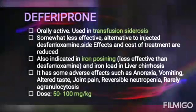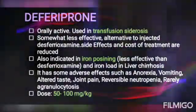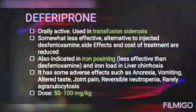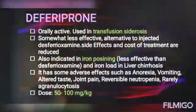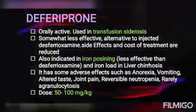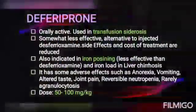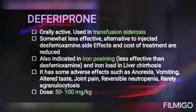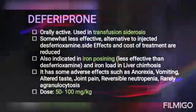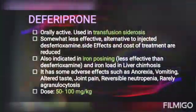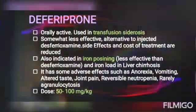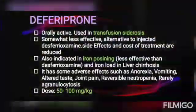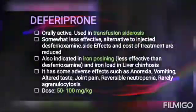The last drug is deferasirox. It is orally active and used in transfusion siderosis — the accumulation of iron in the liver, heart, and endocrine organs — in patients who receive frequent blood transfusions, such as those with thalassemia, sickle cell disease, leukemia, aplastic anemia, or myelodysplastic syndrome. It is a somewhat less effective alternative to injected desferrioxamine, with reduced side effects and cost of treatment. It is also indicated in iron poisoning, though less effective than desferrioxamine, and in iron overload in liver cirrhosis. Adverse effects include anorexia, vomiting, altered taste, joint pain, reversible neutropenia, and rarely agranulocytosis. The dosage is 50 to 100 mg/kg.